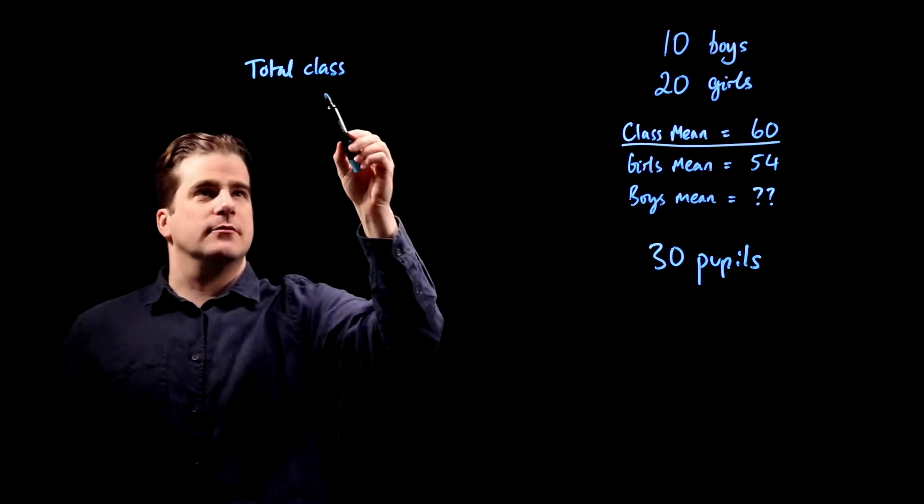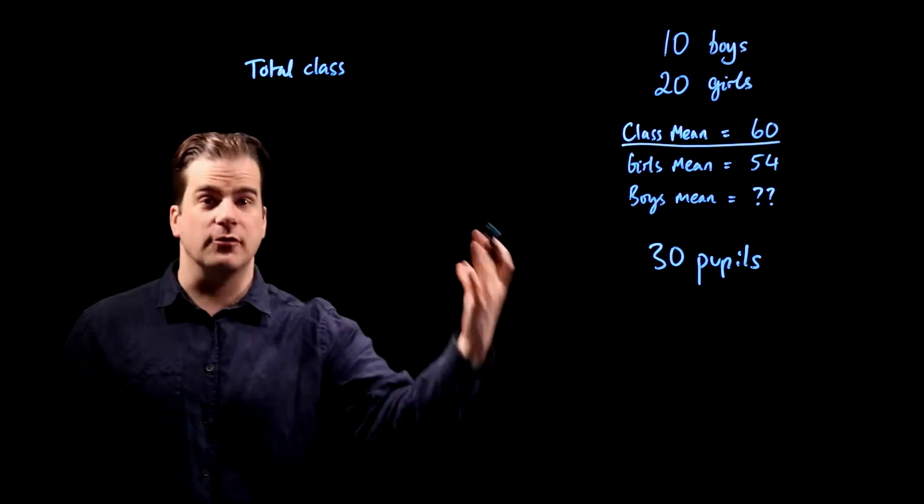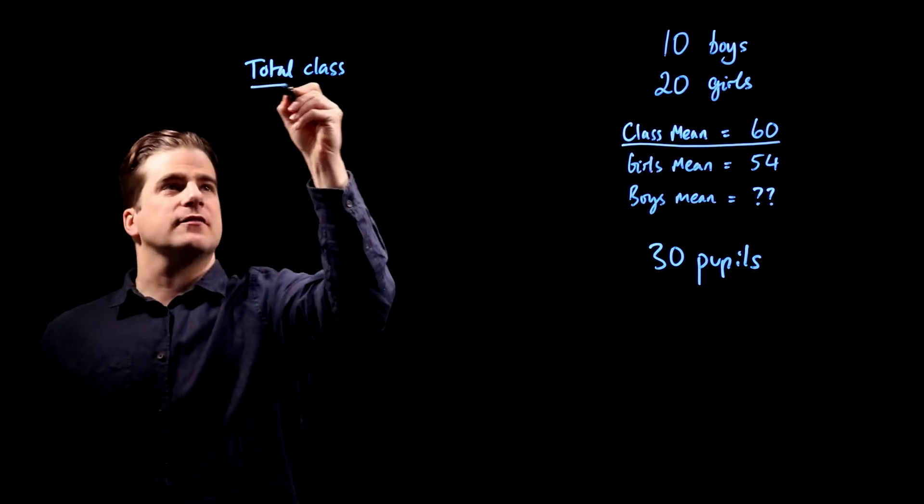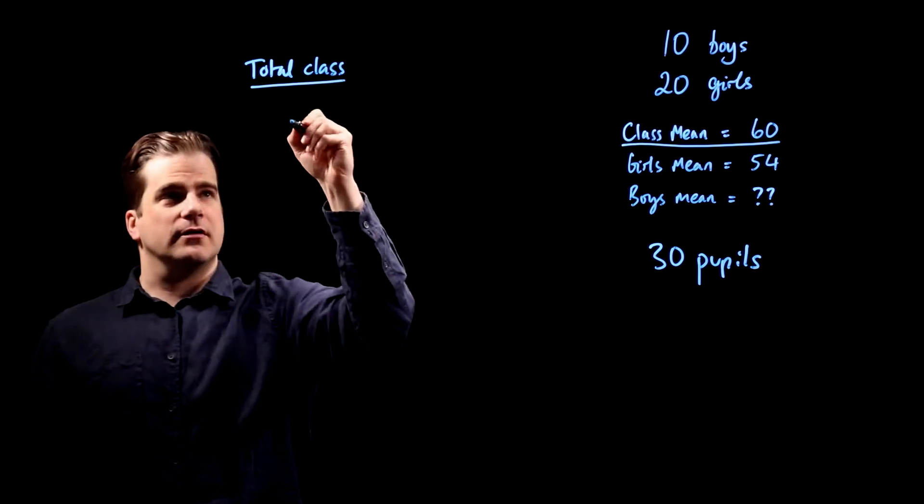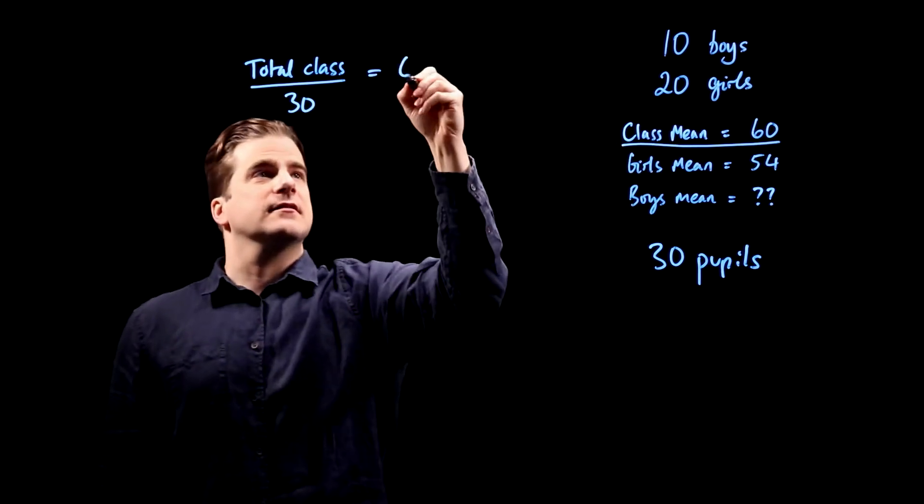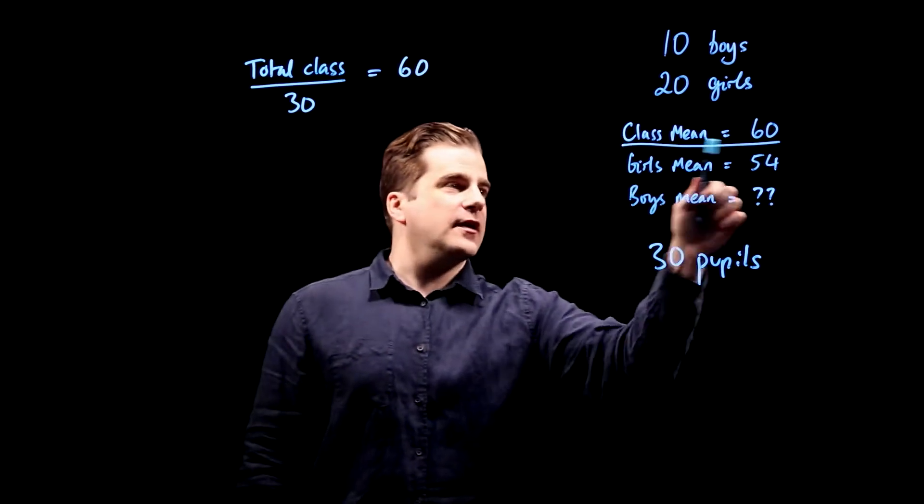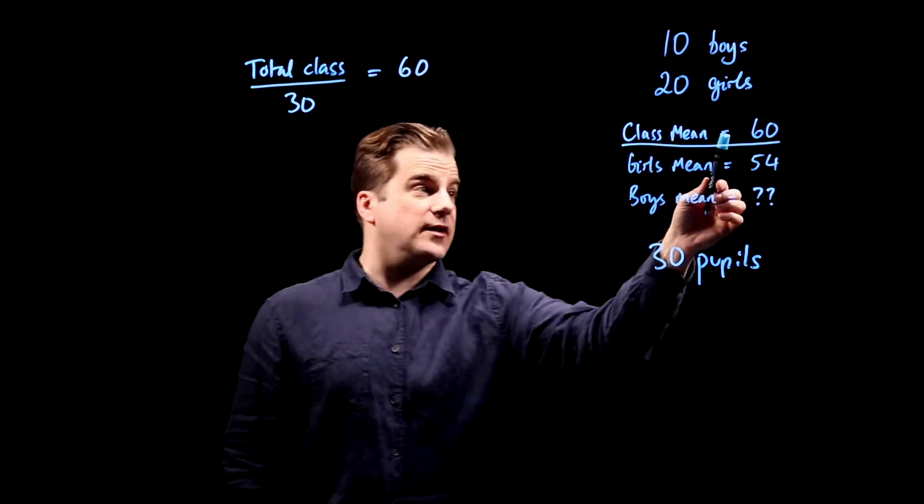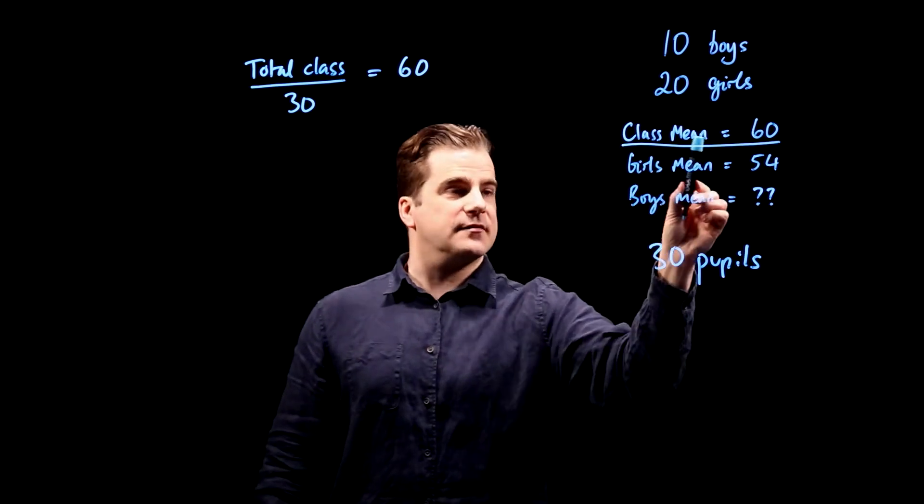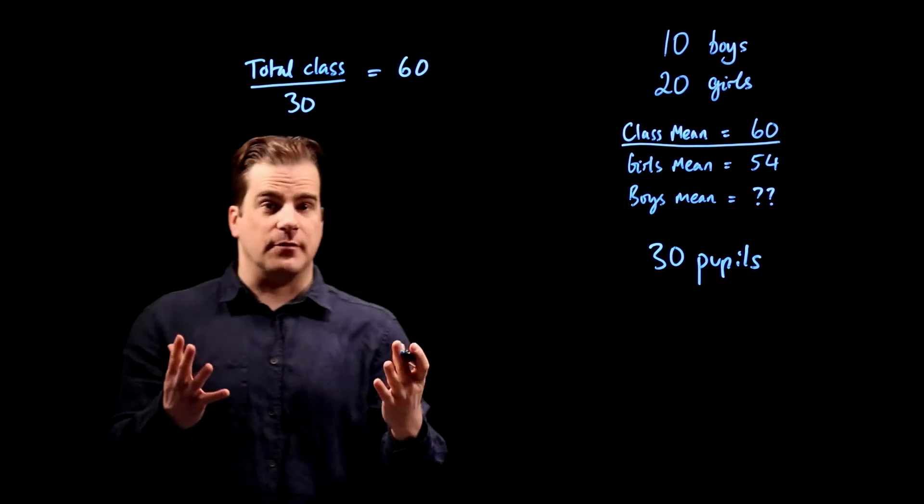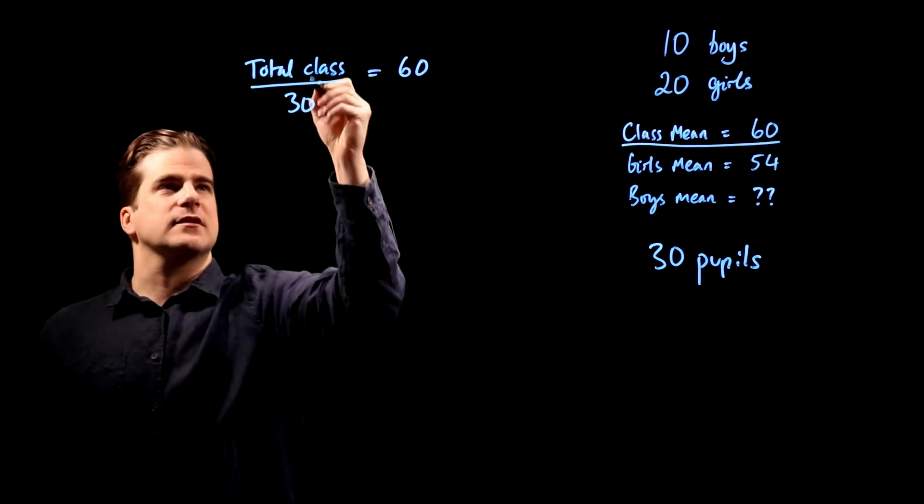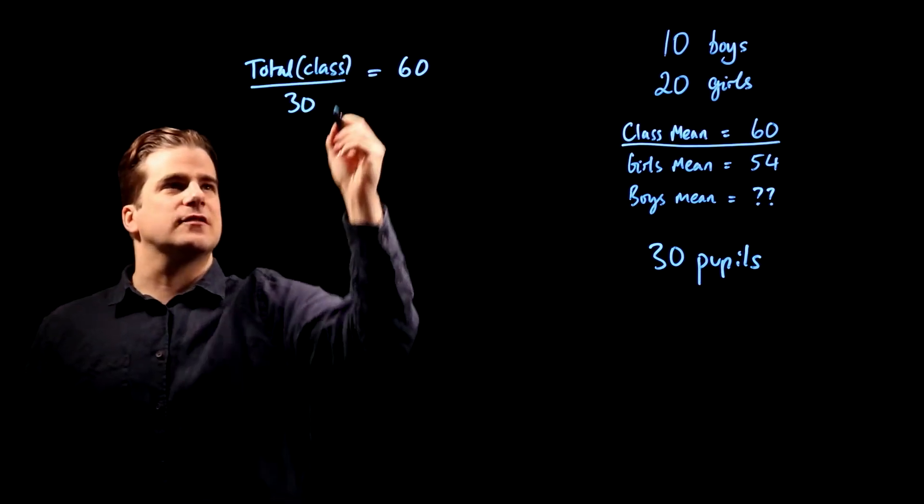Let's improve the equation. The class mean is the total for the class divided by the number of pupils in the class, which is 30, and we're told that equals 60. So that's already an equation. I've just replaced the class mean with the mathematical definition of the mean. The class mean is the total for the class.